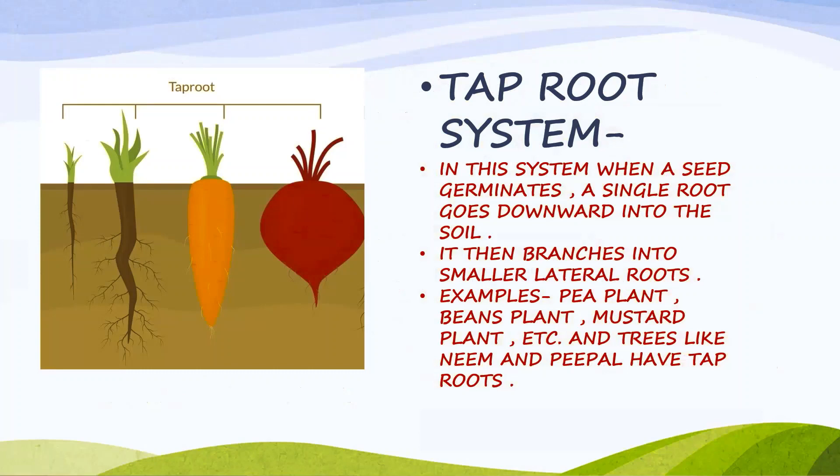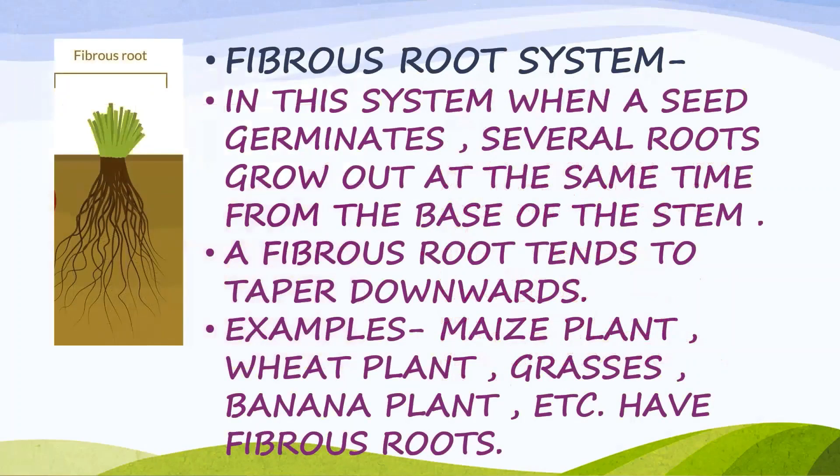Examples of tap root plants are pea plant, beans plant, mustard plant, and trees like neem and peepal.